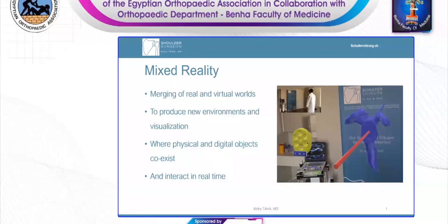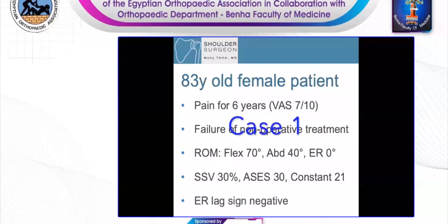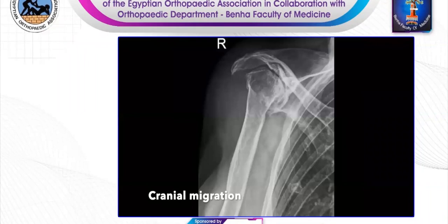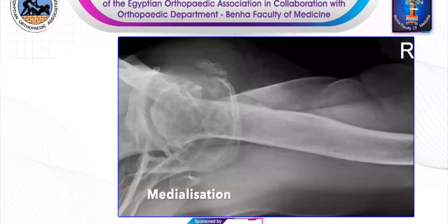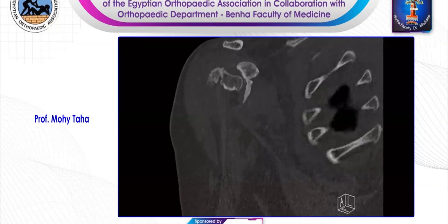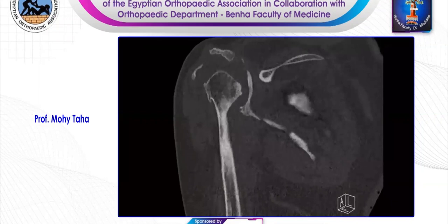Today I'm presenting a case of an 83-year-old female suffering from pain and limitation of range of movement for the past six years. Constant score is 21. Subjective shoulder value 30. Here in the CT, you see the cranial migration and erosion of the glenoid.